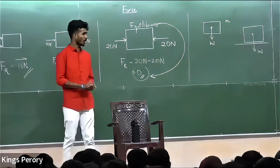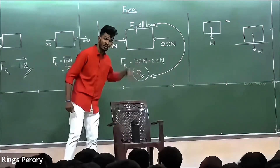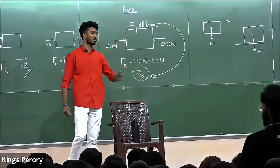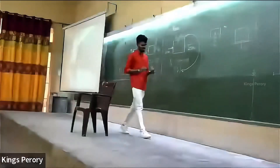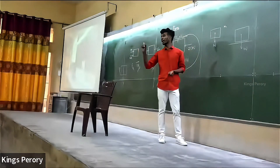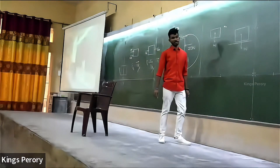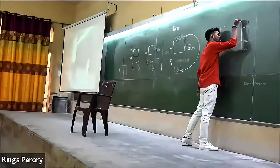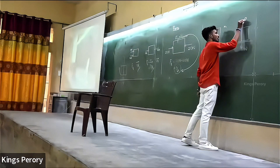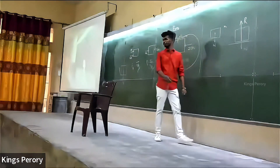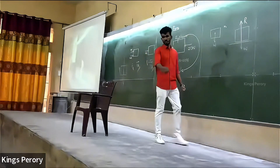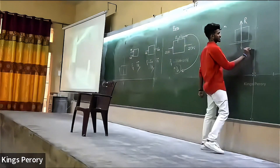That is because to balance the downward force, there should be an upward force. To balance this downward weight, there is an upward force acting. That upward force is called the perpendicular reaction. To balance the downward force, there is a reaction acting upward.